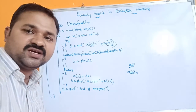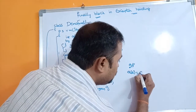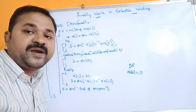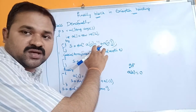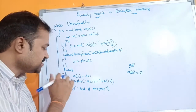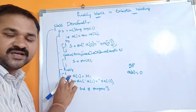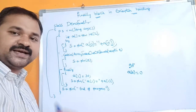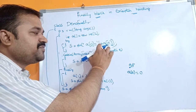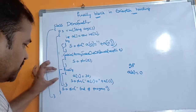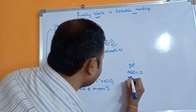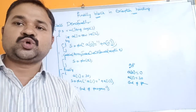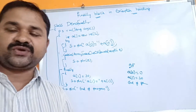We didn't perform initialization, so by default zero is stored. So the output is 'a[0] is equal to 0'. Here there is no exception in the try block, so control goes to the next statement after the catch block, which is the finally block. The finally block always executes whether there is an exception or not. a[1] is equal to 30 will be printed, then 'end of program' will be printed. This is the advantage of the finally block.